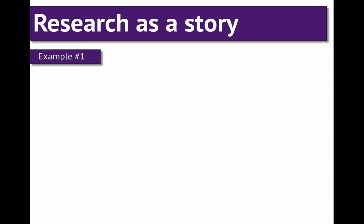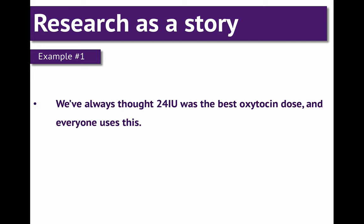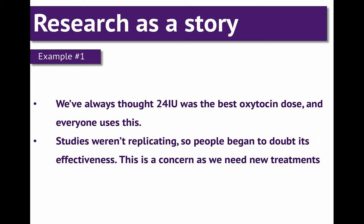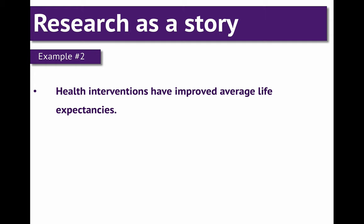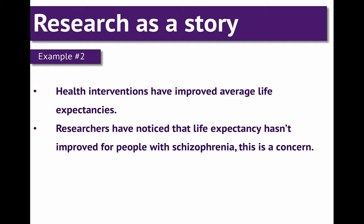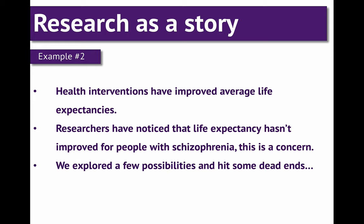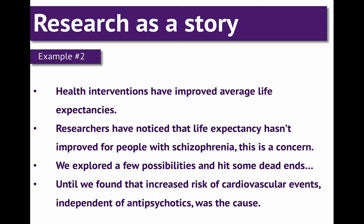Now, how do we actually make our research into a story? Using that same Pixar template, here's an example from my own research. We've always thought that 24 international units was the best oxytocin dose, and everyone uses this — but studies weren't replicating, so people began to doubt its effectiveness. This is a concern, as we need new treatments for several psychiatric disorders characterized by social dysfunction. Because of that, we tried a lower dose of intranasal oxytocin, and found that this was more effective than the 24 international unit dose. In a second example: health interventions have improved average life expectancies, but researchers noticed that life expectancy hasn't improved for people with schizophrenia. We explored a few possibilities and hit some dead ends, until we found that increased risk of cardiovascular events independent of antipsychotics was the cause.